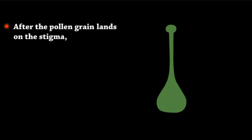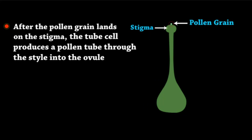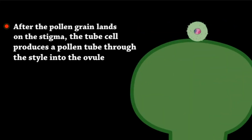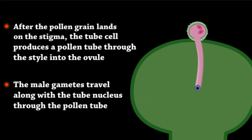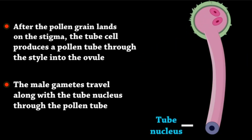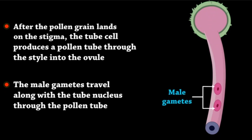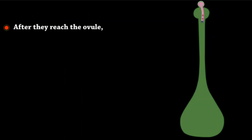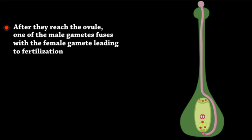After the pollen grain lands on the stigma, the tube cell produces a pollen tube through the style into the ovule. The male gametes travel along with the tube nucleus through the pollen tube. After they reach the ovule, one of the male gametes fuses with the female gamete, leading to fertilization.